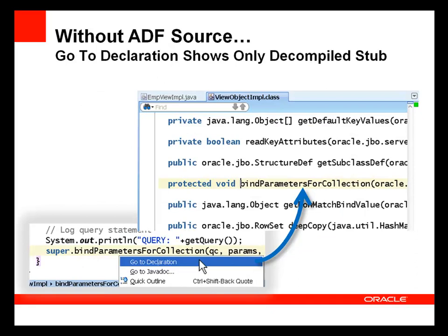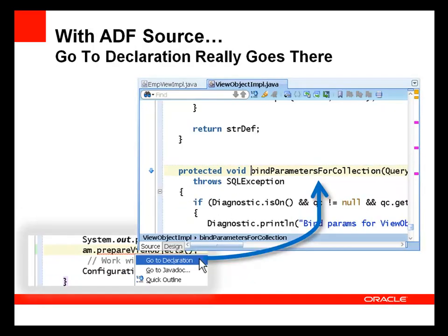Finally, without the ADF source, when you right-click on an ADF method in the code editor and choose GoToDeclaration, the editor will simply show the method stub from the decompiled class. With the ADF source, however, GoToDeclaration takes you to the actual method implementation, where you can set breakpoints, watch variables, and just generally be able to more comprehensively debug issues.